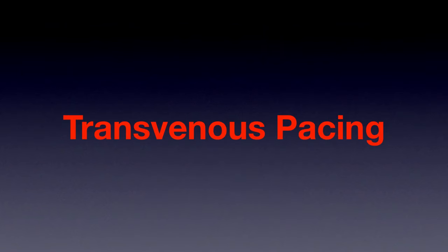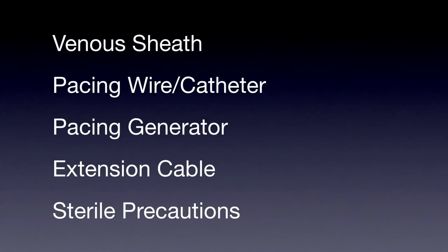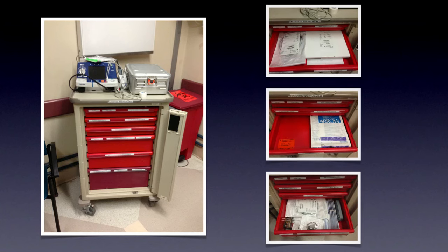Now let's talk about transvenous pacing. You'll need different supplies: a venous sheath introducer, the pacing wire or catheter, a pacing generator, extension cable to connect the wire to the generator, and sterile precautions — because you're putting a wire into a patient's heart. Ideally, your facility will have a procedure cart with transcutaneous and transvenous pacing equipment separated by drawers, including pacing catheters, sheaths, the generator, extension cable, and extra supplies.